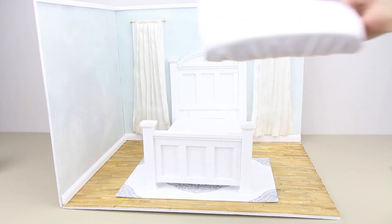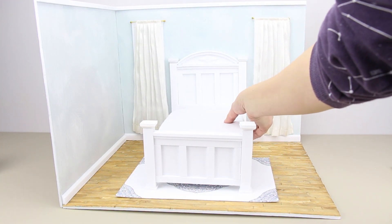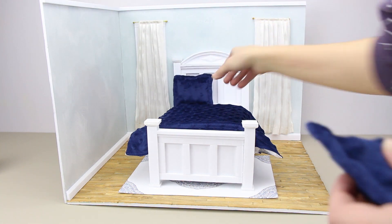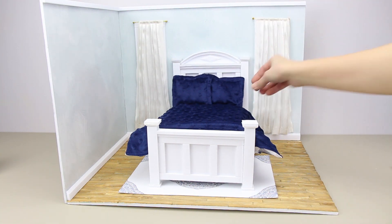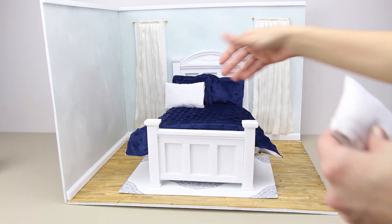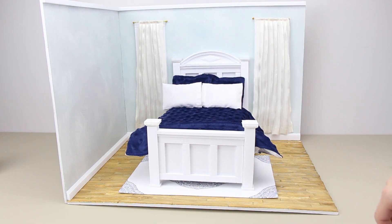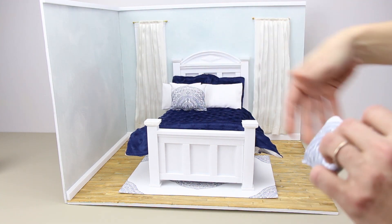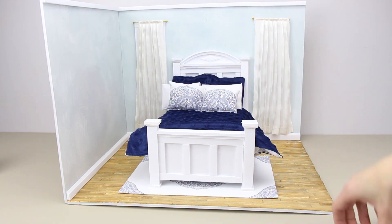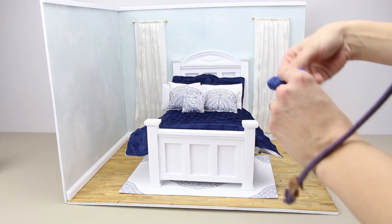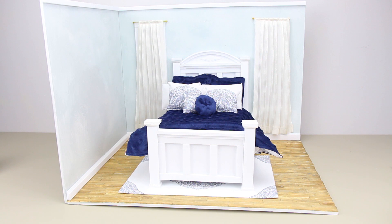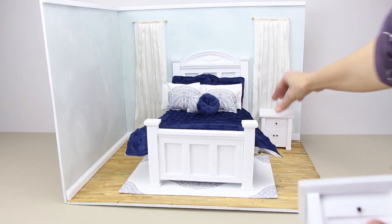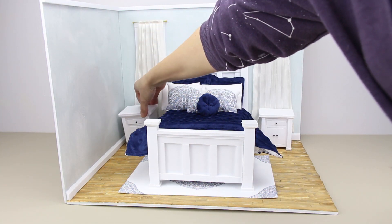I used a piece of packing foam for the mattress and covered it with a white fabric. For the bedding, I used the pillow sham to make a fitted sheet, a flat sheet, pillows, and pillow slips. I also made two large blue pillows, one round pillow, and a bedspread with other fabric from the thrift store.